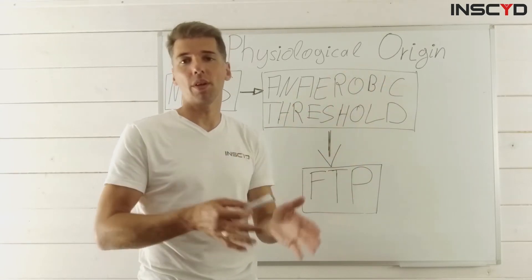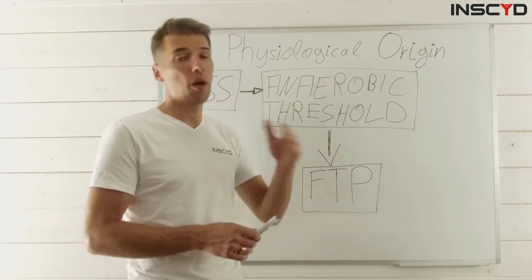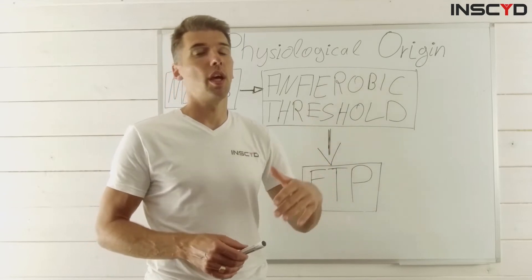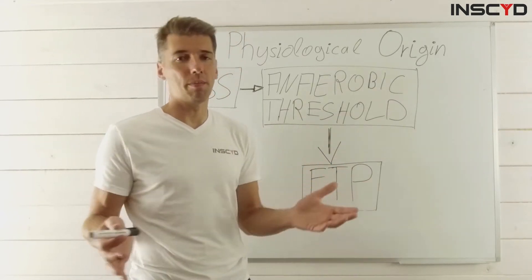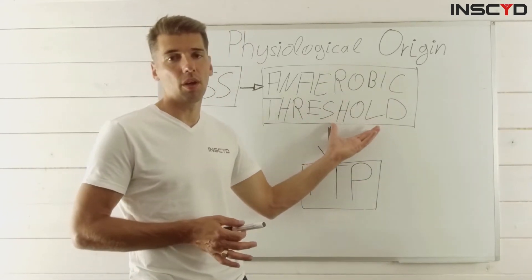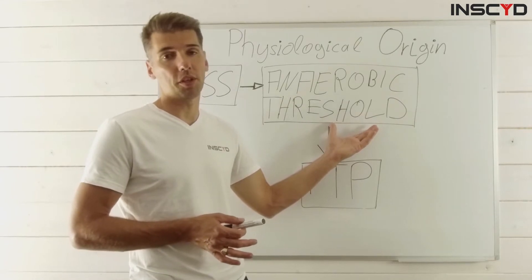That is kind of the traditional protocol. You basically increase exercise intensity stepwise, three minute, five minute, eight minute steps whatsoever, measure the lactate concentration, and then use whatever kind of method to derive, calculate the power output running speed at anaerobic threshold.